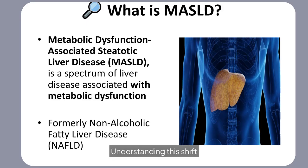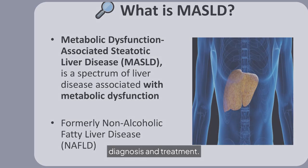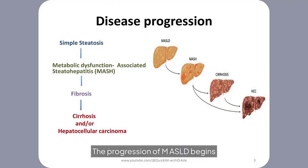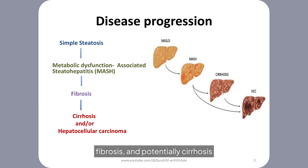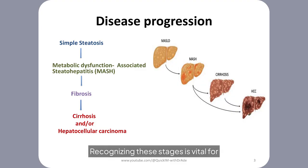Understanding this shift is crucial for accurate diagnosis and treatment. The progression of MASLD begins with simple steatosis, advancing to metabolic dysfunction-associated steatohepatitis, MASH, fibrosis, and potentially cirrhosis or hepatocellular carcinoma. Recognizing these stages is vital for timely intervention and management, preventing severe liver damage.